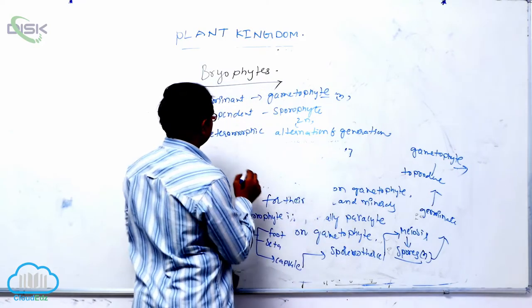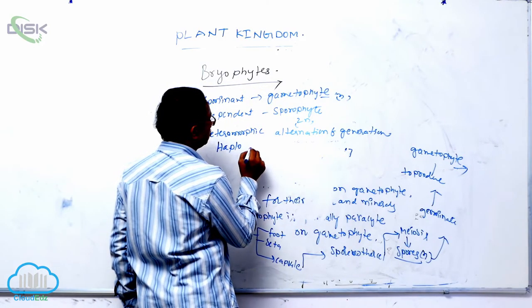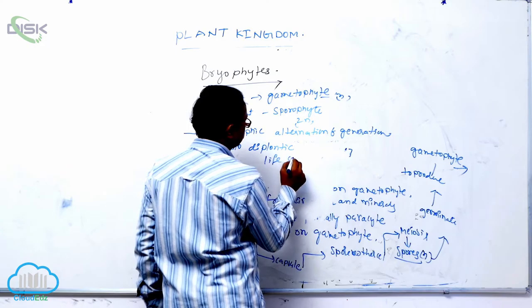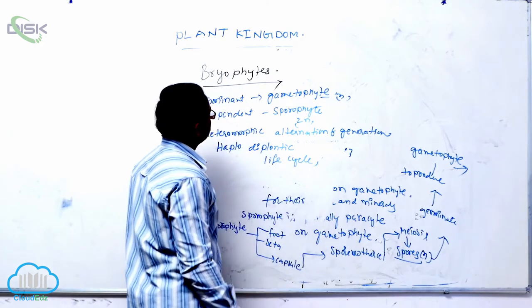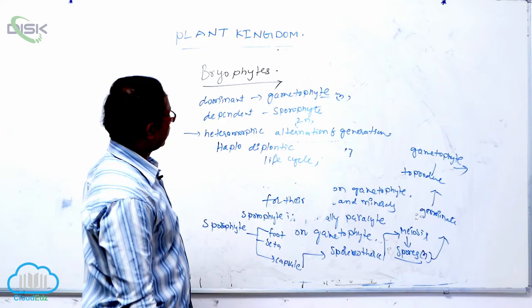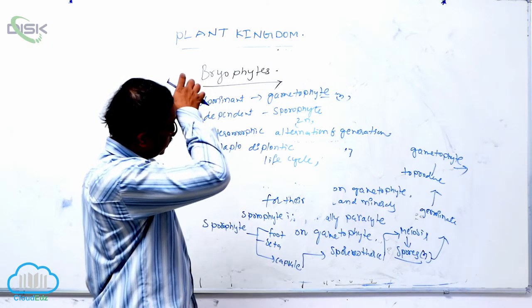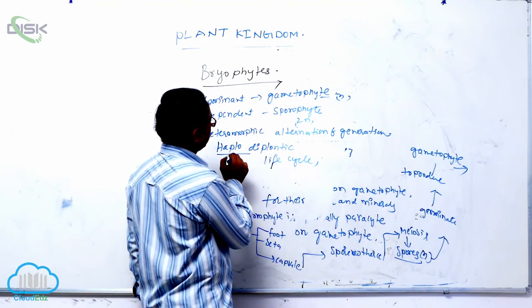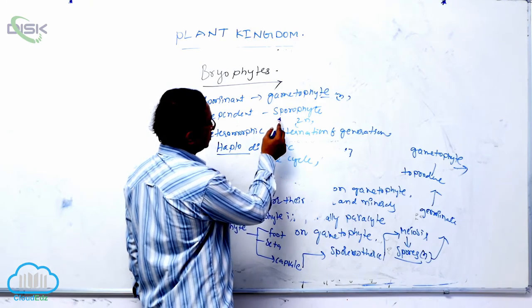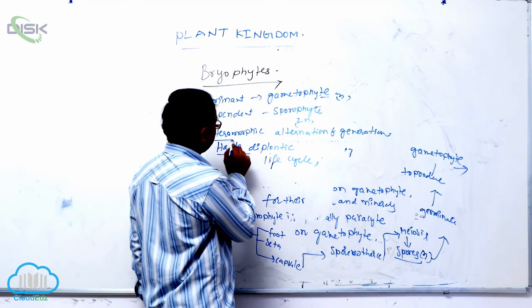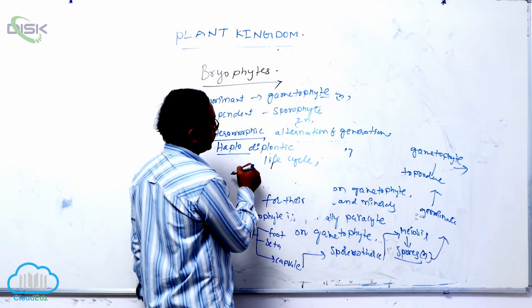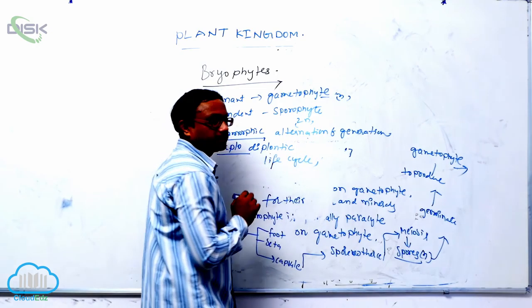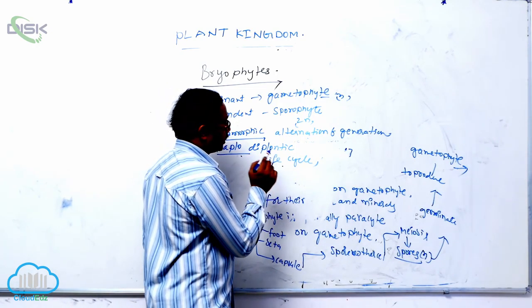This is called a haplodiplontic life cycle. The dominant gametophyte and dependent sporophyte show heteromorphic alternation of generations. 'Haplo' refers to the gametophyte and 'diplontic' refers to the sporophyte. Since they appear morphologically as two different types, it is known as a heteromorphic alternation of generations, or haplodiplontic life cycle.